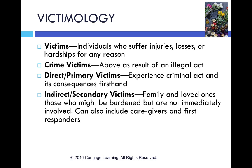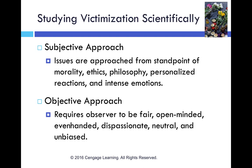We have direct or primary victims — those are people who experience the criminal act and its consequences firsthand. In a murder case, the primary victim is the person who was killed. There are also indirect or secondary victims: the family and loved ones of those impacted, as well as caregivers and first responders. When we think about victimology, we're thinking about all people impacted by a criminal activity.